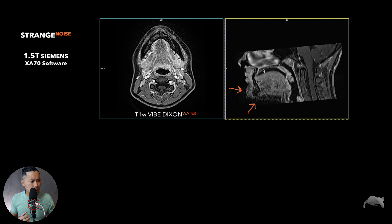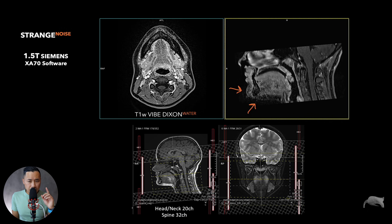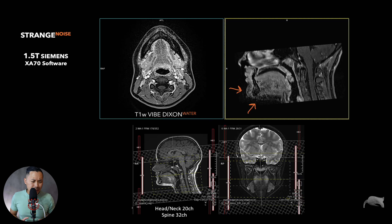My thought was about the coil elements. What I was using here was a head-neck 20-channel coil along with the spine 32. As you can see, the elements — the front part is here and the back part is there on the head, and then you have the spine coil. This is something we've been taught: whatever is near your field of view, you should use those elements.